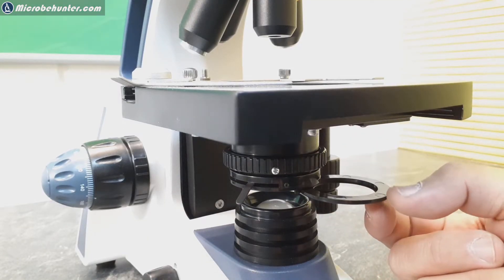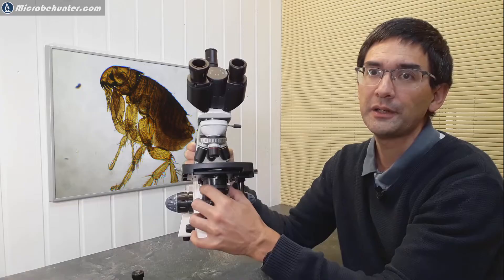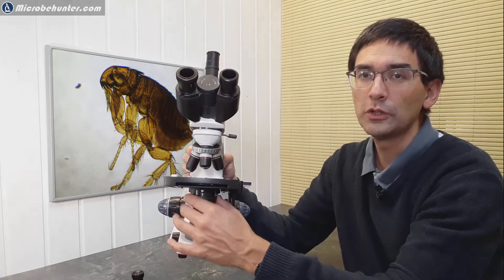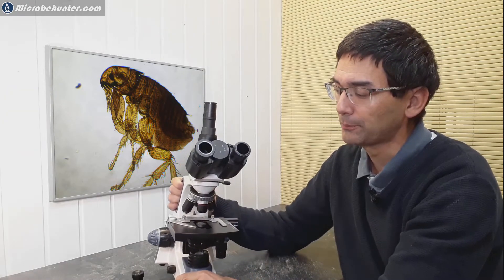Some other microscopes also have a knob that you can turn, but here the condenser can be rotated up and down or moved up and down by simply turning it here.